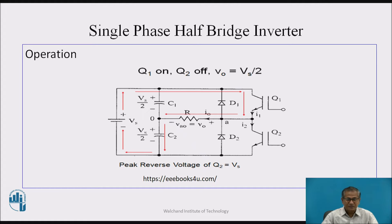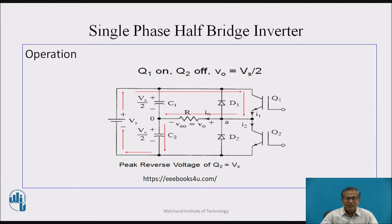Let us see how it works. When the gate pulse is applied to switch Q1, at the same time the gate pulse for Q2 is blocked. Therefore Q1 conducts and acts as short. The direction of current is: source → Q1 → load R → C2 → source. In this process, C1 and C2 are charged up to Vs/2. Assume this direction of current is positive and the voltage across the load is Vs/2. At the same time, power device Q2 is in the non-conducting state; therefore the PIV across Q2 is Vs.